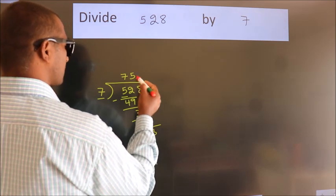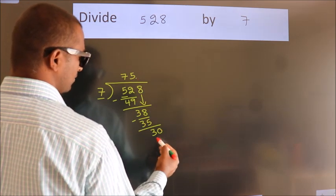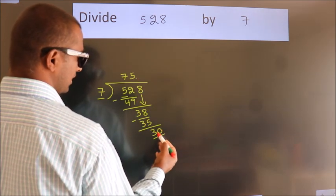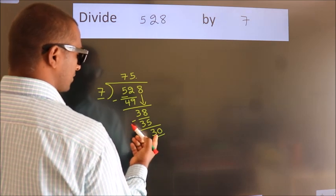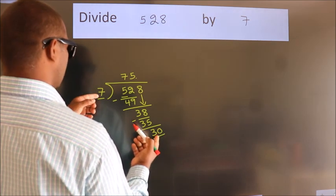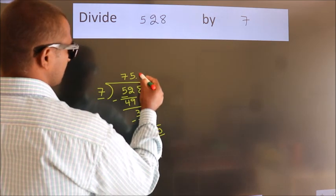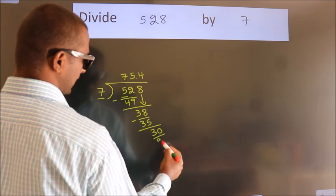So what we do is put a decimal point and take a 0, giving us 30. A number close to 30 in the 7 times table is 7×4=28.